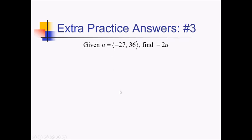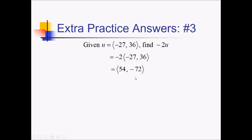On this problem, we're given this vector in component form and we want to find negative 2 times u. So we're just going to write negative 2 times this vector and distribute that negative 2 to get the new vector. So this is going to be 54 comma negative 72.